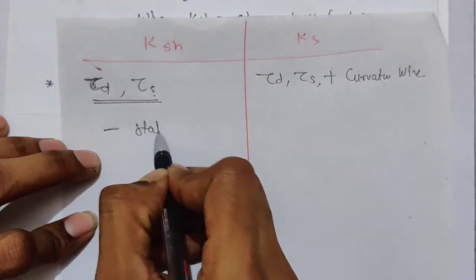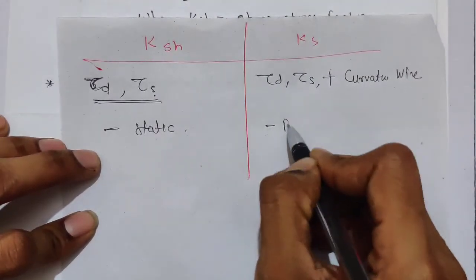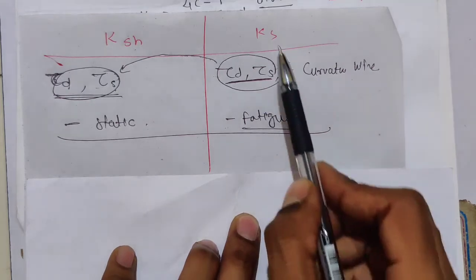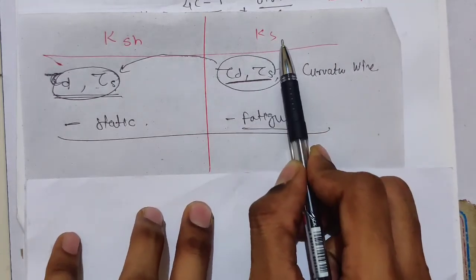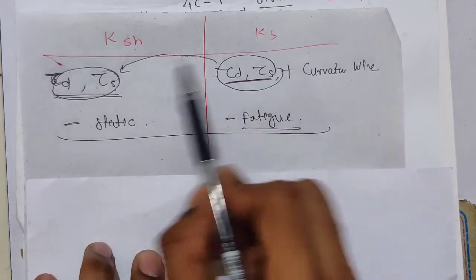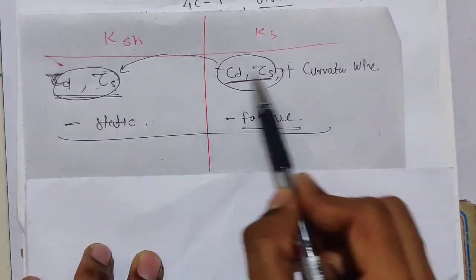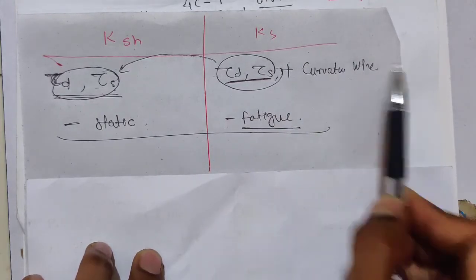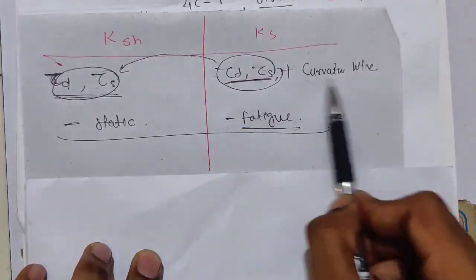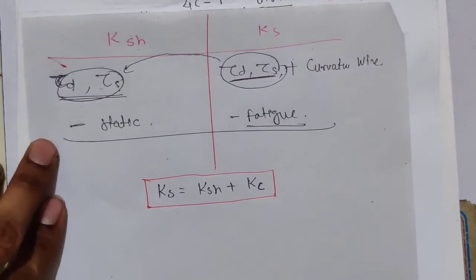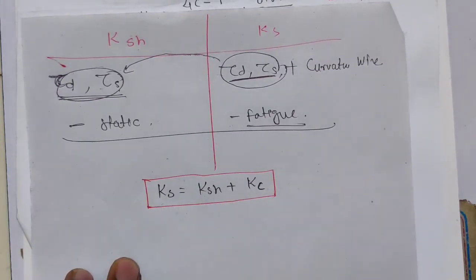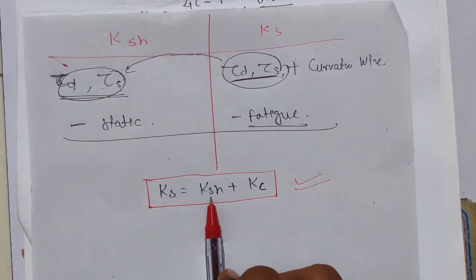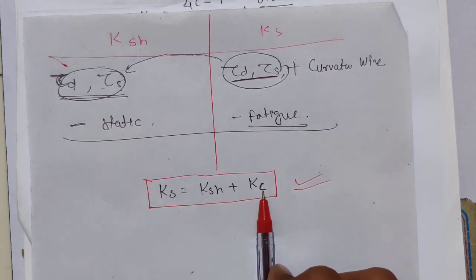K_sh is used in static loading conditions and K_s is used in fatigue loading conditions. K_s is the same as K_sh but includes an additional curvature factor K_c. So K_s = K_sh + K_c, meaning the Wahl concentration factor equals the shear stress factor plus the curvature factor. This is important to remember.